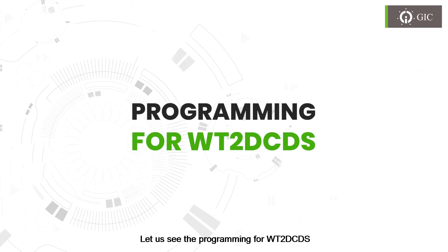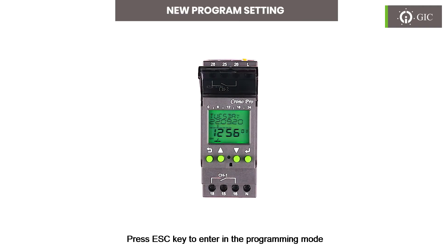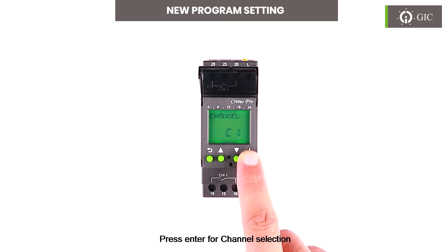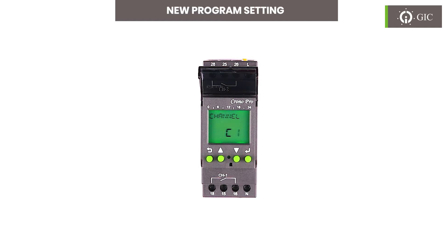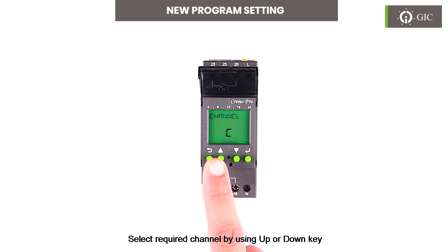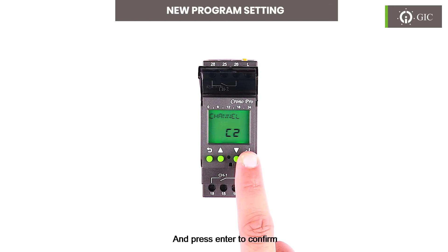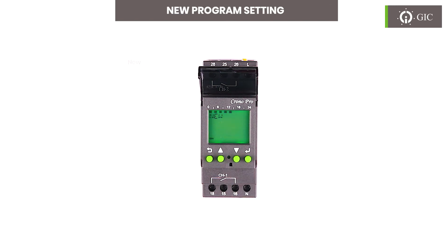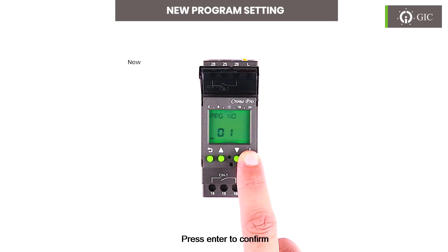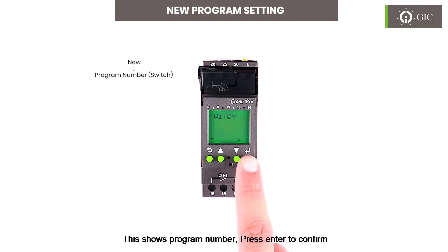Let us see the programming for WT2DCDS. Press the escape key to enter the programming mode. Press enter for channel selection — this is available for two-channel devices. Select the required channel using the up or down key, and press enter to confirm. 'New' means to start a new program; press enter to confirm.